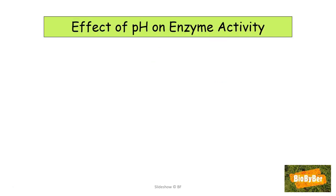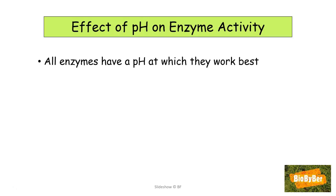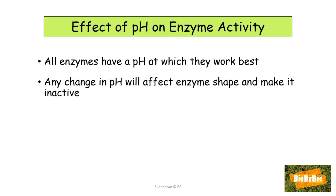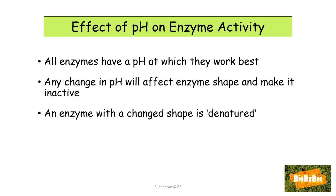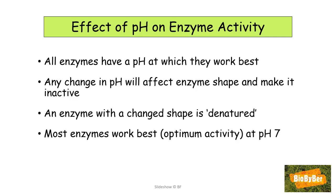What is the effect of pH on enzyme activity? All enzymes have a pH at which they work best. Even a slight change in pH will cause enzyme activity to change, because the enzyme's shape is affected and it will become inactive. An enzyme with a changed shape is said to be denatured and it cannot function.